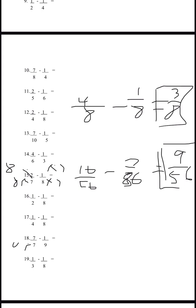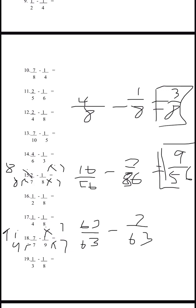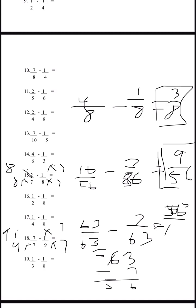Number 18: multiply by 9 and by 7, top and bottom. We get 63 over 63 minus 7 over 63. 63 minus 7 is 56, so 56 over 63 is the answer for number 18.